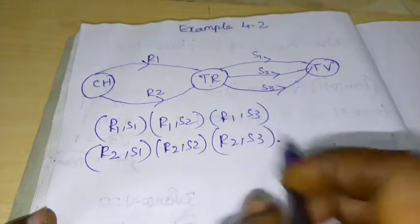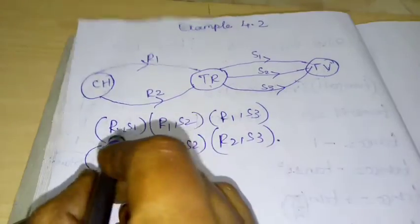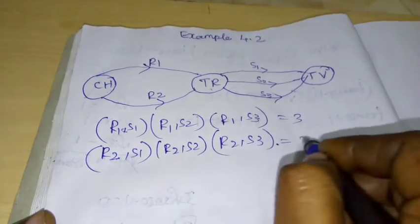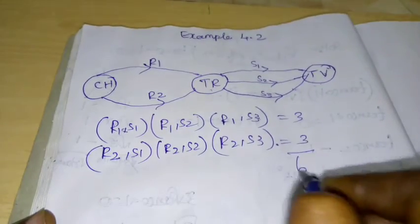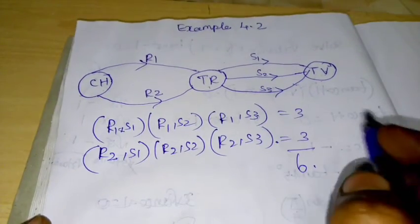So the total number of ways is 6. That is 2 multiplied by 3 equals 6.